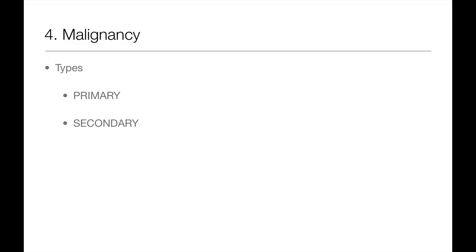The vertebral body can be affected by primary haematological malignancies or secondary metastases from elsewhere. 90% of malignancies in the spine present with back pain, which is often described as focal, constant, and unremitting. Because the cancer may be a secondary metastasis, the patient may also have symptoms relating to the primary — for example, rectal bleeding and abdominal pain if the primary is in the bowel, or haemoptysis if the primary is in the lung.